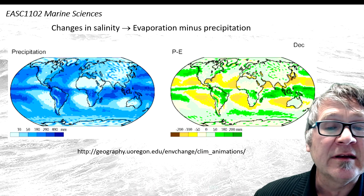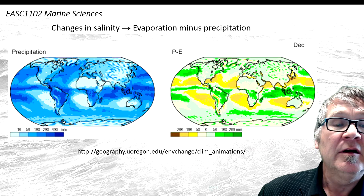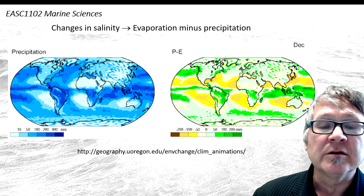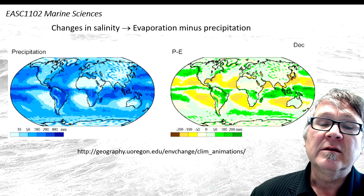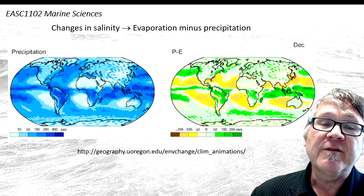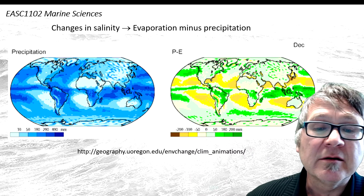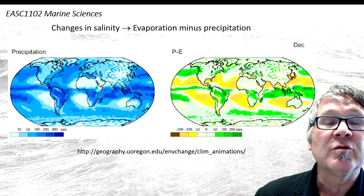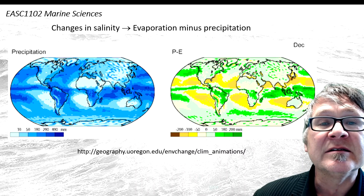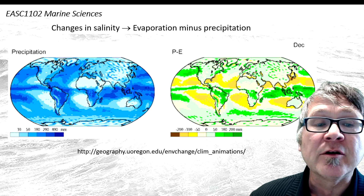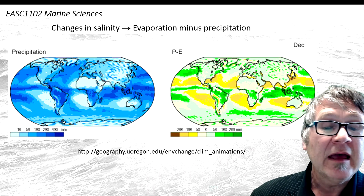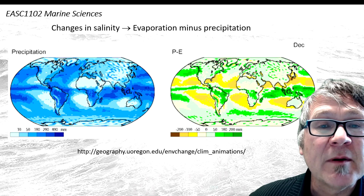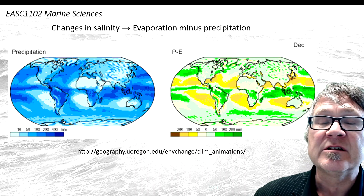You can identify the green areas which are the humid, wet zones, and you can identify the very dry regions, which are shown here as yellow and orange zones. Go to this webpage and have a look at the animations.